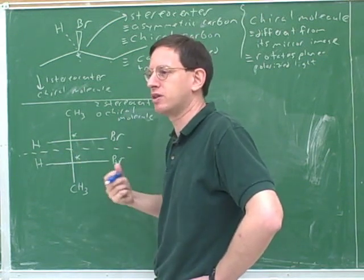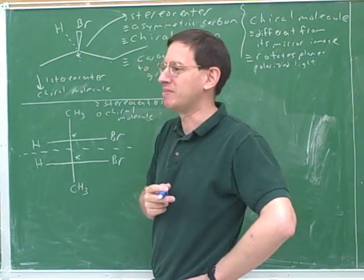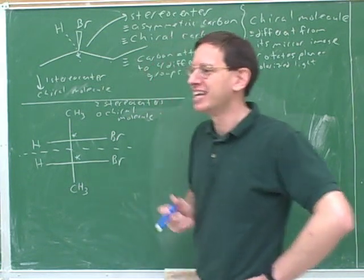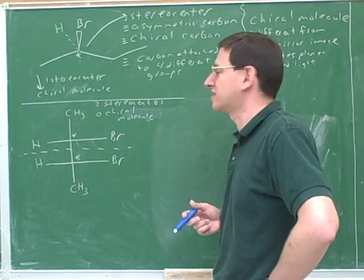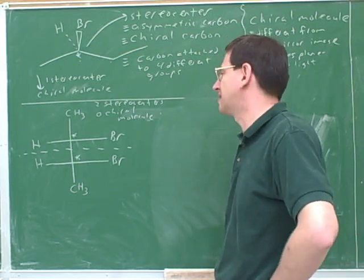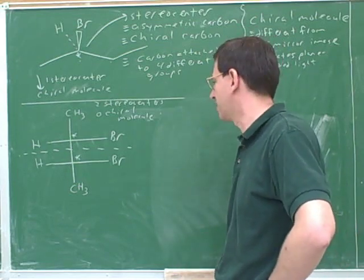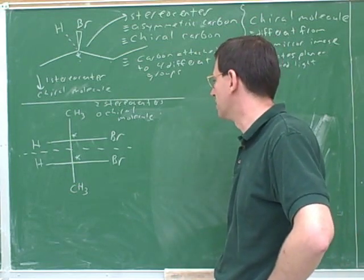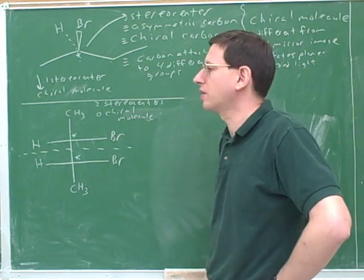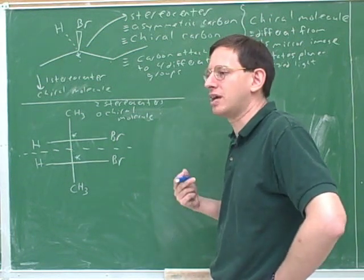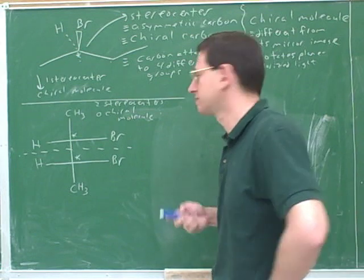There's a special name for this type of molecule that's achiral even though it has stereocenters. It looks like you might need some work on stereochemistry. The name for a molecule that is achiral even though it has stereocenters is meso.